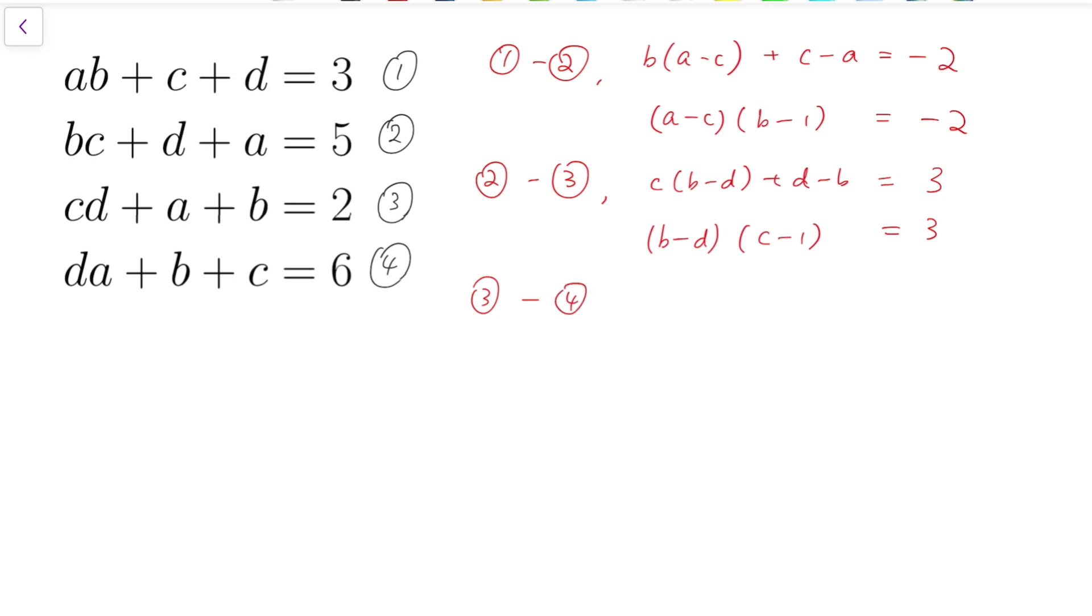And the third equation minus the fourth equation, we have d times c minus a plus a minus c equals minus 4. And so factoring, we have c minus a times d minus 1 equals minus 4.